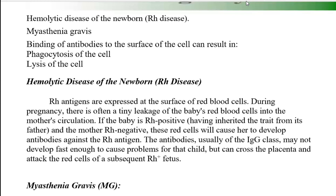The antibodies, usually of the IgG class, may not develop fast enough to cause a problem for the first child. Basically, the mother's immune system considers the baby's red blood cells (which carry the antigen) as foreign and produces IgG antibodies against them. These antibodies cross the placenta and re-enter the baby, where they bind onto the baby's red blood cells, causing their breakdown — this is what we call RH disease. This is how hemolytic disease occurs and represents a Type 2 hypersensitivity reaction.